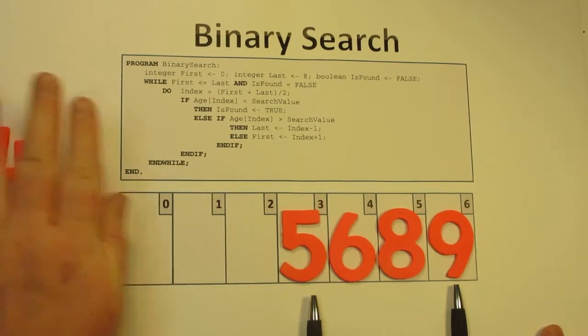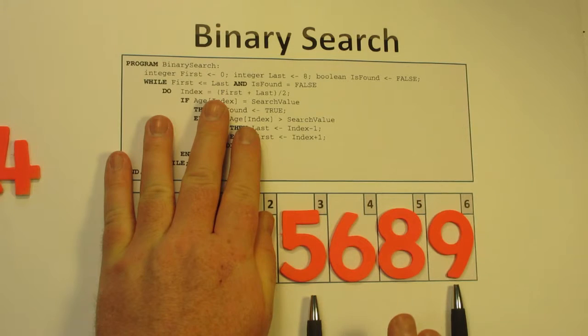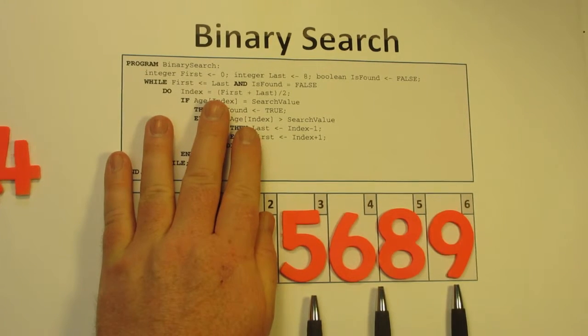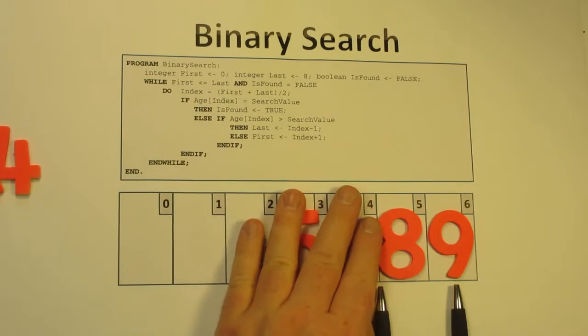Now we want to go to the middle of this part of the array and say is nine in between the start and the middle, or between the middle and the end? We know that nine is between the middle and the end, so we take away this part of the array.